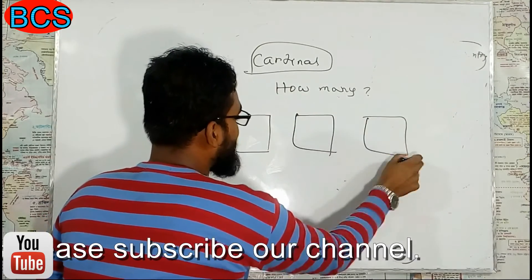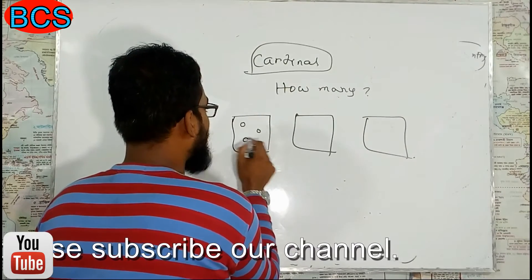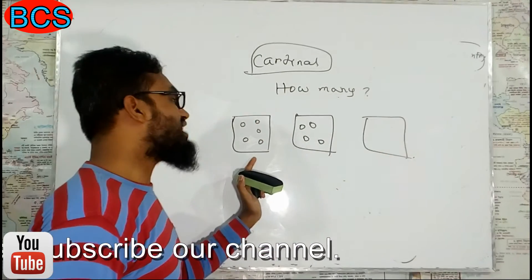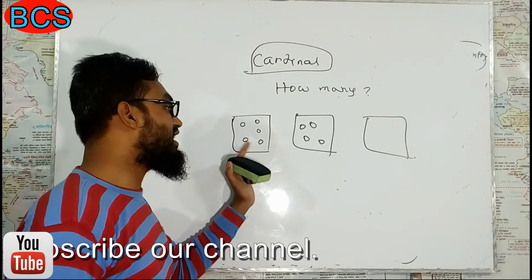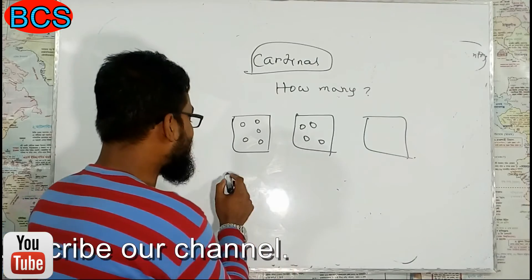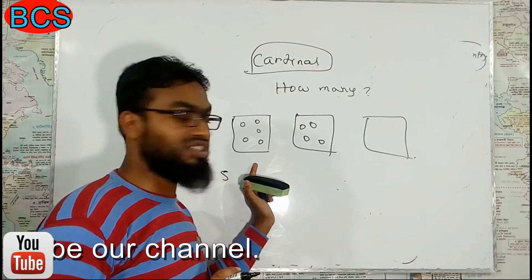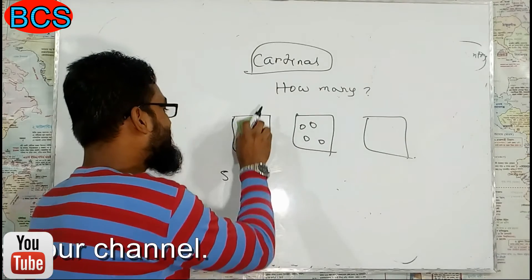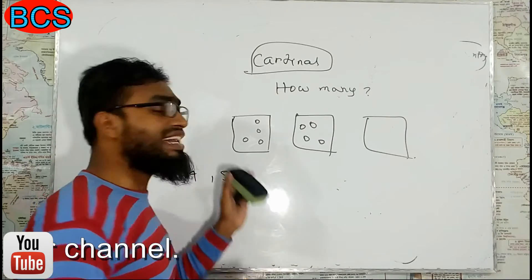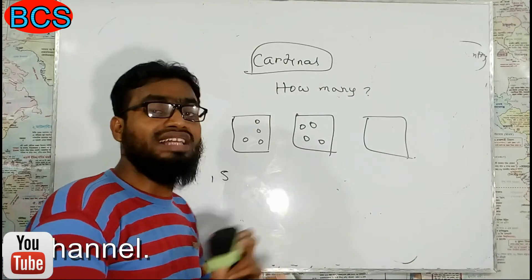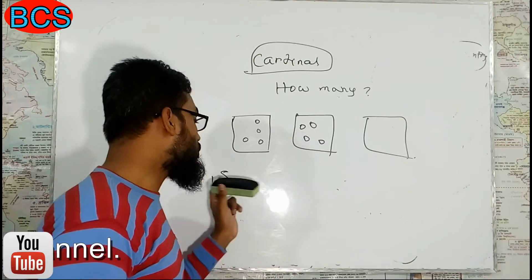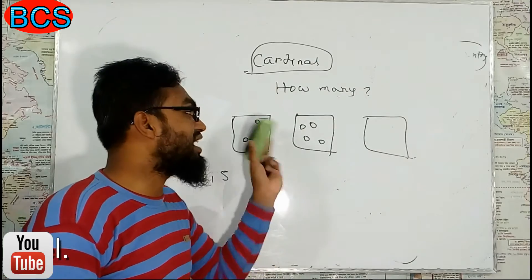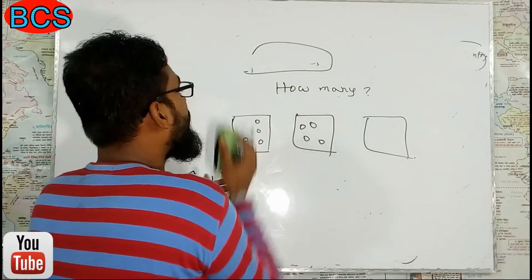For example, one box here, this is another box, this is another box. Inside of this box, some balls are available. Here we can see how many balls are inside of this box. We can see twenty balls. So this box has four balls. This is how we count using cardinal number, which indicates the order.